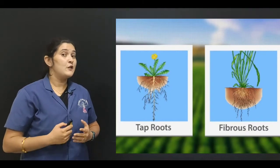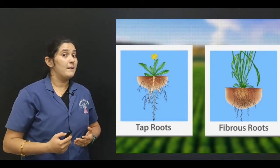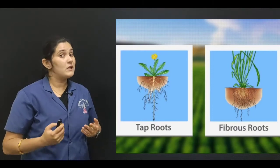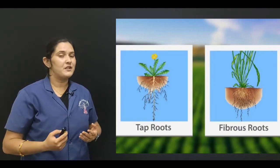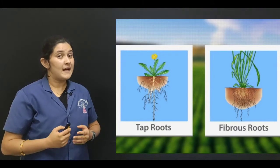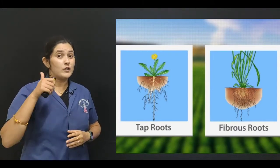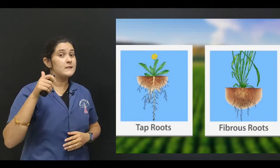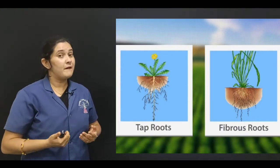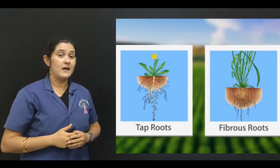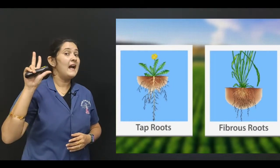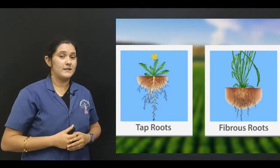In today's class you will be learning about special types of roots. They are special tap roots and special fibrous roots. Special tap roots are water storing roots and food storing roots. Special fibrous roots are propagative roots, aerial roots, and buttress roots.